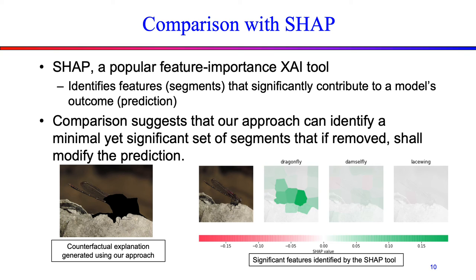Although this is an initial comparison study, I would like to point out that SHAP executes the VGG16 model a thousand times to identify the important features that contribute to a model's decision. In contrast, our approach derives explanations with an average of 20 to 25 test cases.